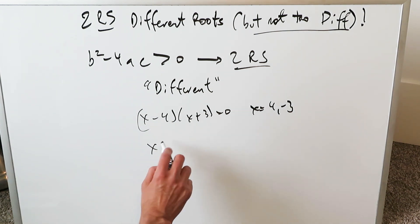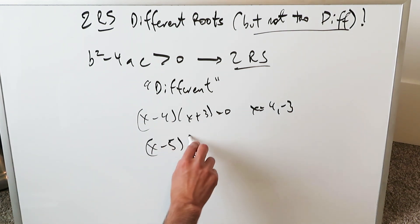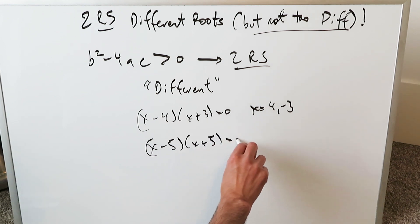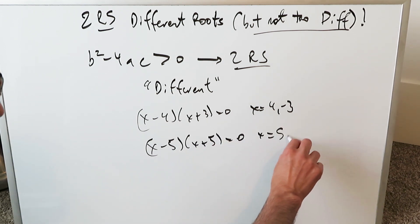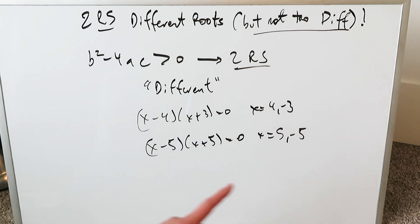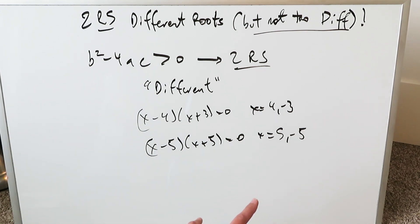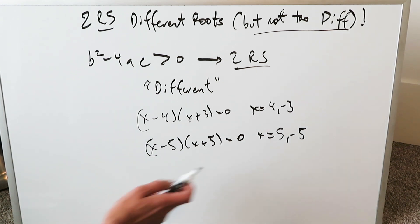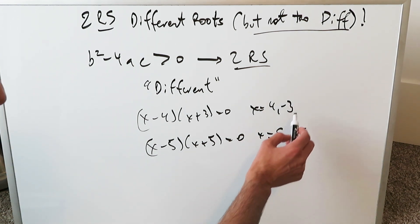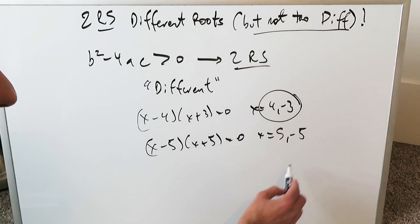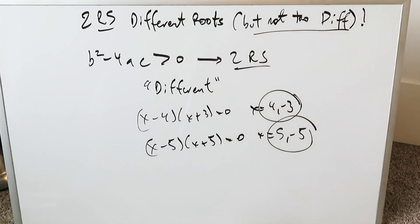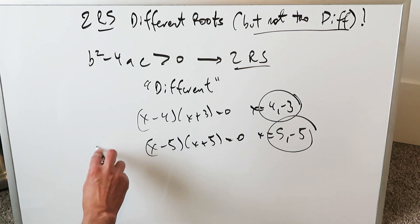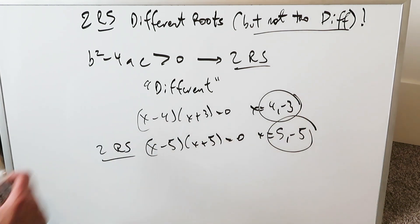Consider this: x minus 5 times x plus 5 equals 0, x is equal to 5, minus 5. Two different roots, they're real solutions, but they're numerically the same — they differ only by sign. One is positive, one is minus. This first example is certainly quite different; this one is quite similar, differing only by means of the negative, but it's still two real solutions because they're two different items.